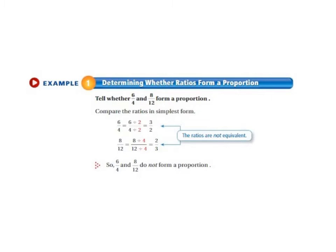So 6 fourths equals 6 over 4. And if you divide the top and the bottom by 2 you get 3 halves. And 8 twelfths equals 8 over 12. And you divide the top and the bottom by 4 and you get 2 thirds.